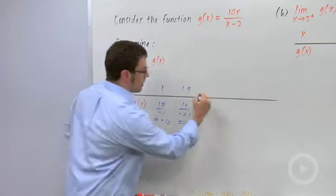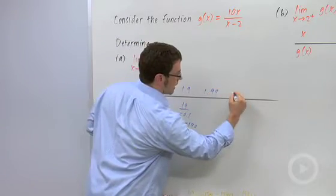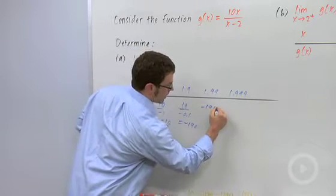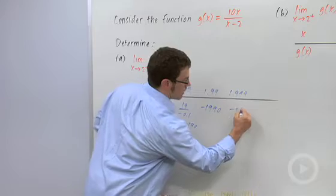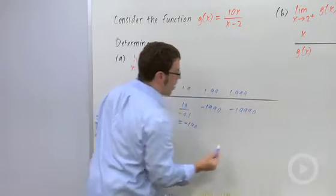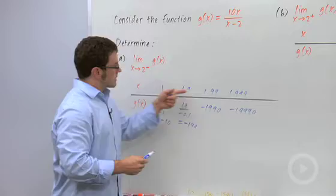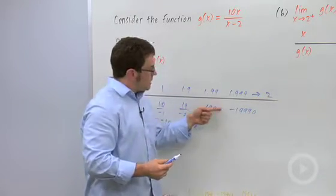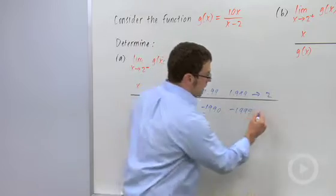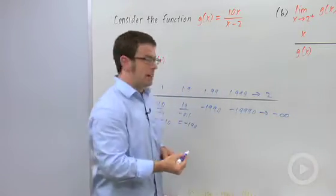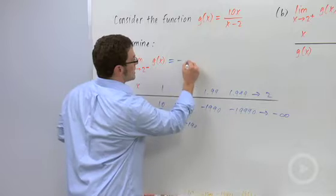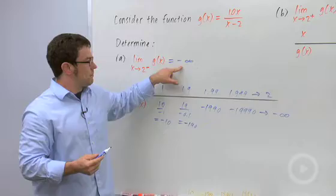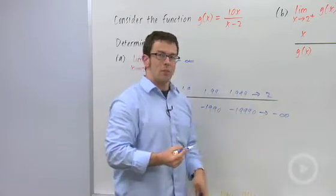And let me just speed this up. The rest of the values, 1.99, 1.999, I would get negative 1990, negative 19990. What's happening to the g of x values as x gets closer and closer to 2? They seem to be decreasing more and more rapidly. And we say that they're going to negative infinity. So we would say the limit as x approaches 2 from the left of g of x is negative infinity. The values decrease without bound.